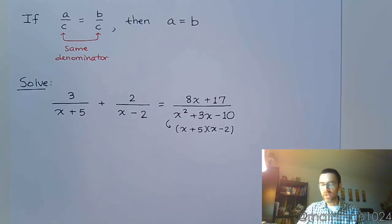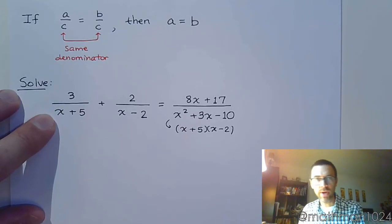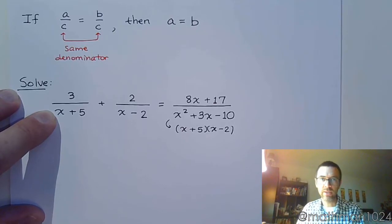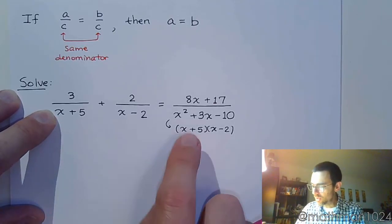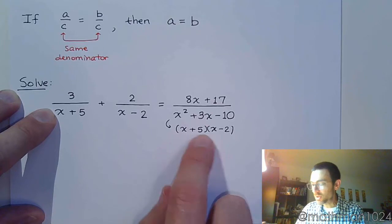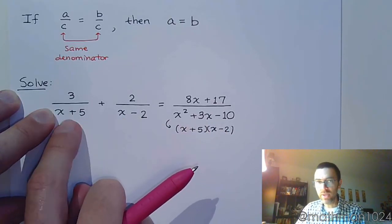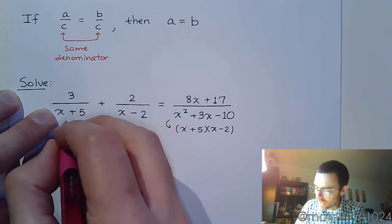And so when you look at this, you're going to go piece by piece and identify what is missing for each fraction. So if I look at this denominator, x plus 5, what factor does everybody else have that he doesn't have? Well, this guy has x plus 5, but he also has x minus 2, and he has x minus 2. So this denominator is missing the factor x minus 2.